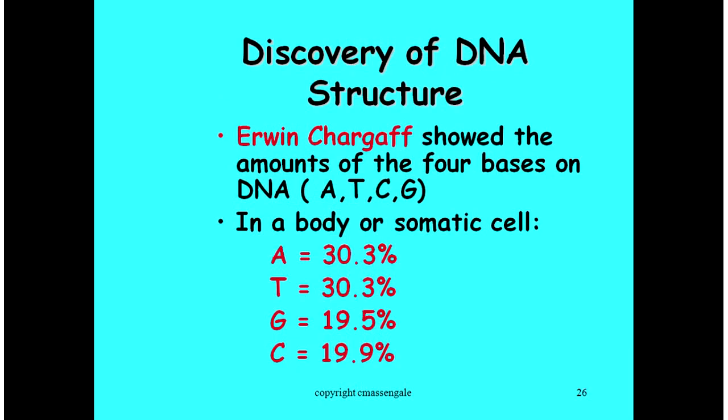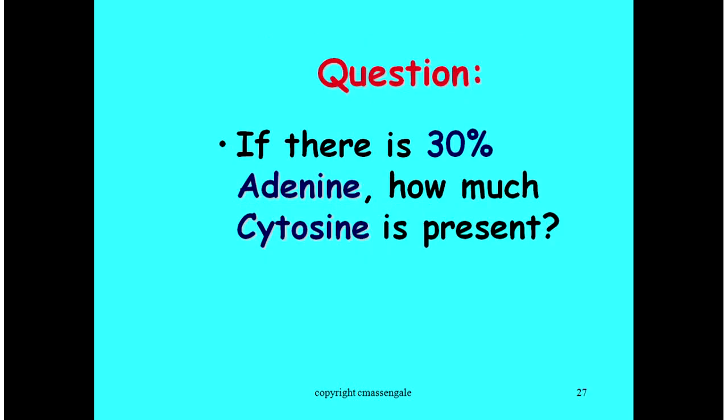He determined that by figuring out the percentage of the four different bases in a single human body cell. He found that in a human body cell there's about 30% adenine and 30% thymine. Because there are equal percentages of adenine and thymine he thought they must bond together. Wherever there's an adenine there has to be a thymine on the other side. Same goes for guanine and cytosine. They had approximately 20% each. What you should notice about these numbers is that adenine and thymine are equal whereas guanine and cytosine are equal.